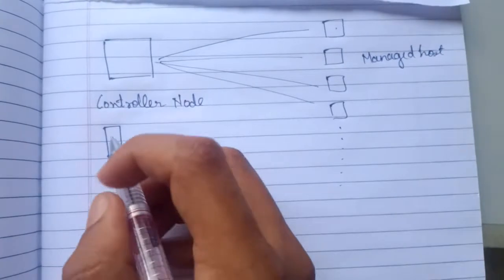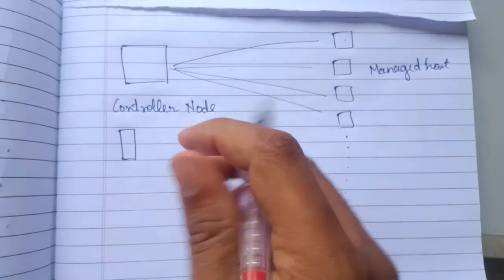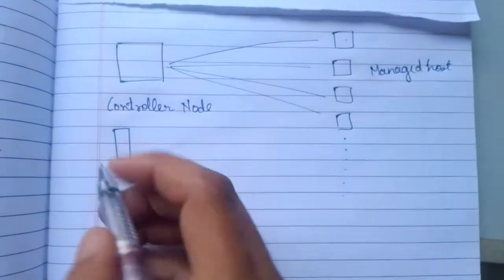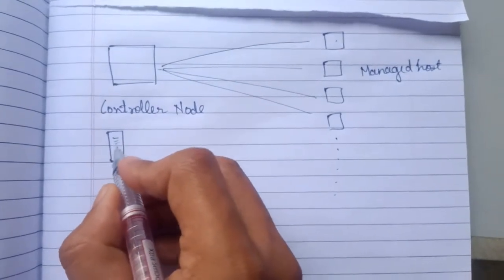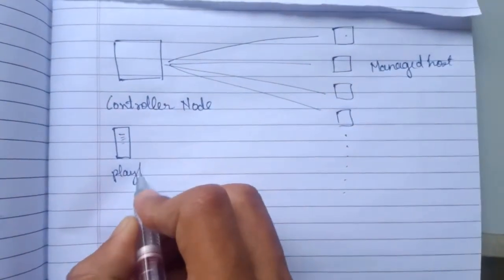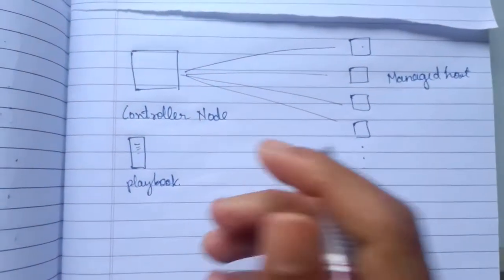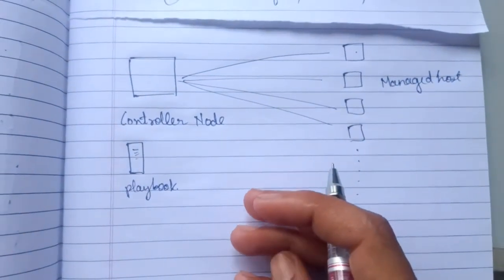So you will define you want Ansible to install Apache on this, so you will define the set of tasks. This is called as playbook. So playbook is a file which contains the set of tasks to be executed on the managed host.